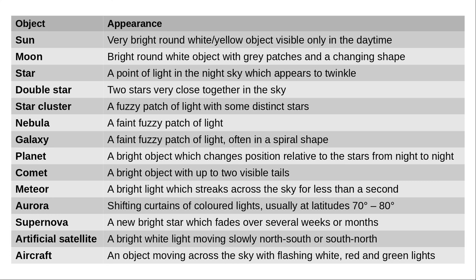Here is a summary, with one sentence for each of these objects to describe how they appear to the naked eye. You should learn each of these descriptions for the GCSE. In part two of this video, we'll look at constellations, asterisms, and pointer stars. Thank you for watching. Goodbye, and have an excellent day.